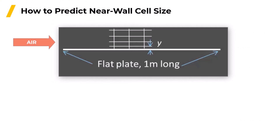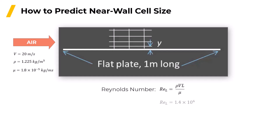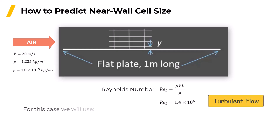Imagine we are going to calculate air flow over a 1-meter-long flat plate. The air velocity is 20 meters per second, and it has the density and viscosity values shown. The Reynolds number for these conditions is 1.4 times 10 to the sixth, so the flow is definitely turbulent. For this problem, we'll use the wall function approach and try to have Y-plus equals 50 at the first grid point.